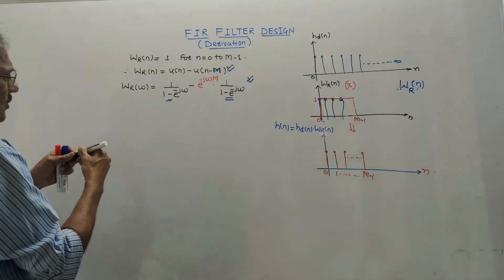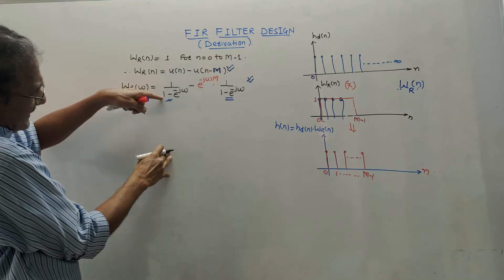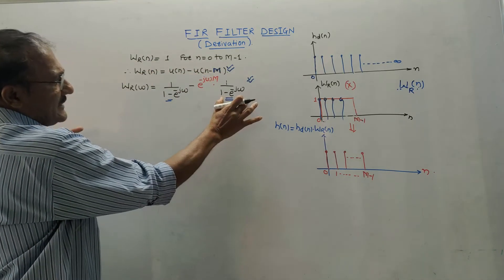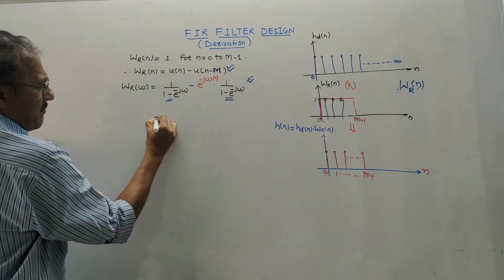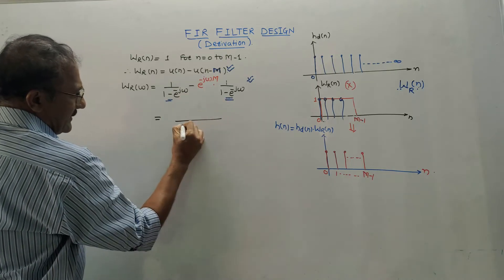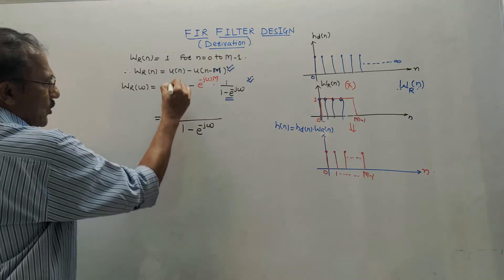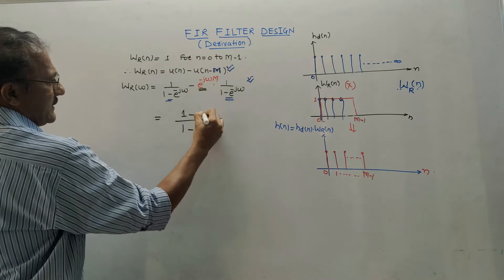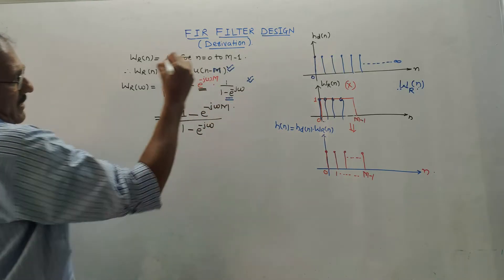Taking the Fourier transform of WR(n) = U(n) minus U(n minus M): the Fourier of U(n) gives 1/(1 minus e^{-jω}), and the Fourier of U(n minus M) gives e^{-jωM}/(1 minus e^{-jω}). Since the denominators are the same, combining with LCM gives (1 minus e^{-jωM}) divided by (1 minus e^{-jω}).